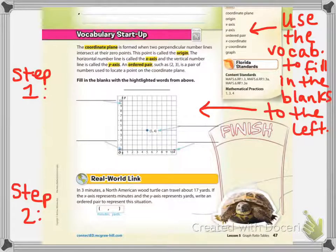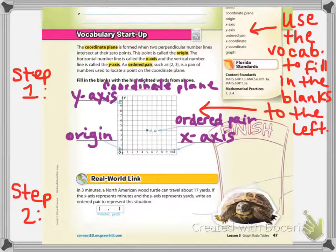All right, on this first page we are talking about graphing ratio tables and we need to start with the vocabulary. You see a list of vocabulary to the right and you see the vocabulary highlighted on the left giving you a little bit of a clue with some definitions. Your first assignment is to fill in the blanks with the highlighted words from the page. Pause right now, answer the questions by filling in the blank, and also do the real world link. Then come back and push play when you're ready to check your answers.